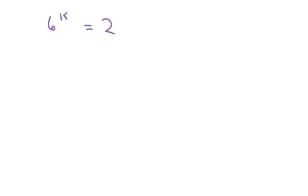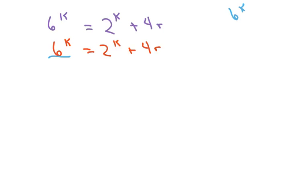What we're going to do is rewrite s of k. We rewrite it so that 6^k equals 2^k plus 4r, moving the 2^k over to make it positive. Now I'm going to rewrite the left side of this expression so that it matches the left side of s of k plus 1. I want to write this as 6^(k+1), and to do that I need to multiply 6^k by 6, because that equals 6^(k+1).